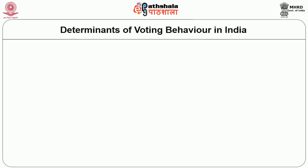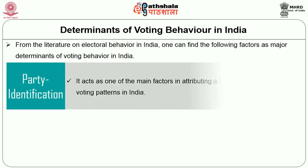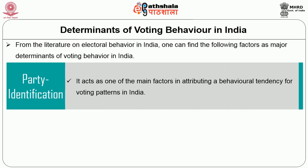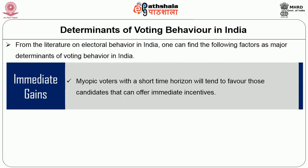Determinants of Voting Behaviour in India. From the literature on electoral politics and electoral behaviour in India, one can find the following major determinants. First, party identification — party identification acts as one of the main factors in articulating a behavioural tendency for voting patterns in India. Second, issues — by forming an identification of issues with the local constituency, the candidate or party aims at gathering support from voters. Third, immediate gains — voters with a short time horizon will tend to favour candidates that can offer immediate initiatives.